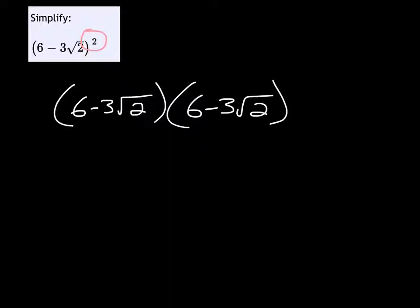In this step right here, I need to make sure that when I'm multiplying these, I'm foiling these terms. So multiply this 6 times the 6 to get 36, and then the 6 times negative 3 root 2 is negative 18 root 2.